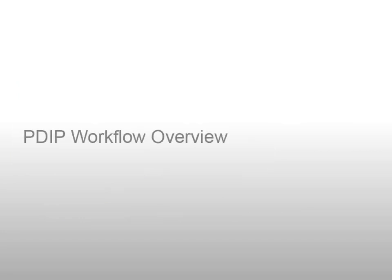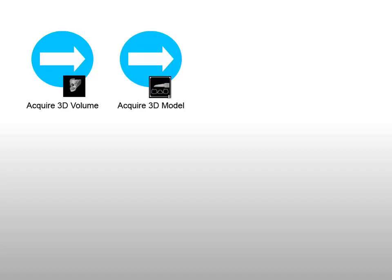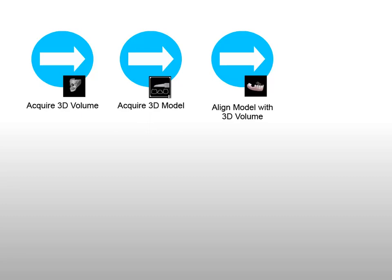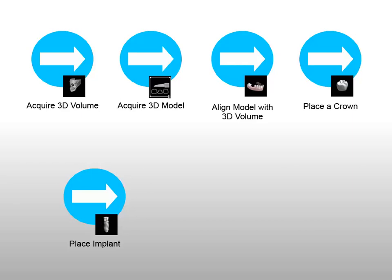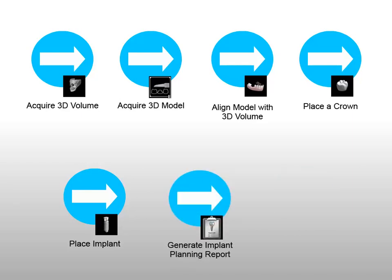The Prosthetic Driven Implant Planning Workflow includes these steps: acquire a patient 3D volume; acquire a patient 3D model using CS8100 3D, CS9300 units, or CS3500 and CS3600 intraoral scanners; align the model with the 3D volume; place the crown; place the implant; and generate an implant planning report, or export the data sets for use with a third-party guided surgery system.